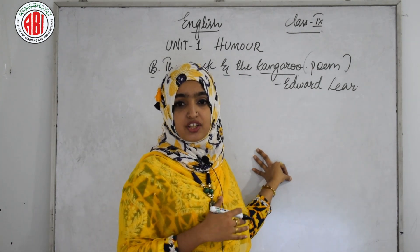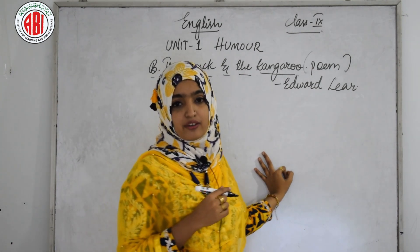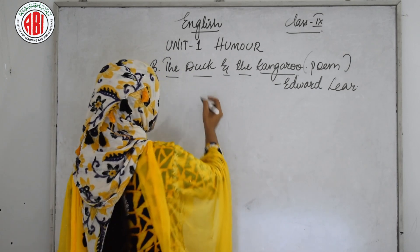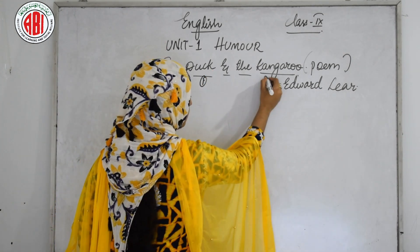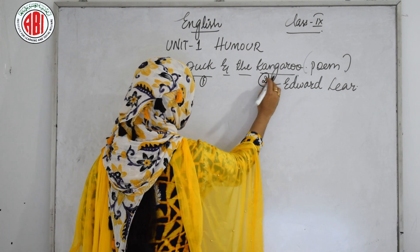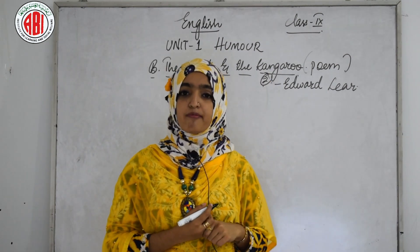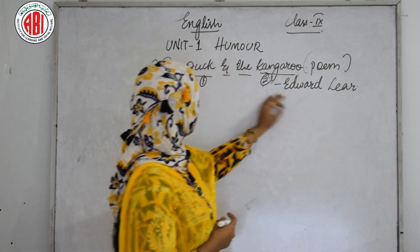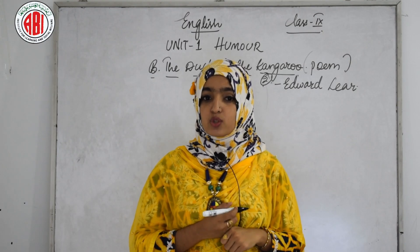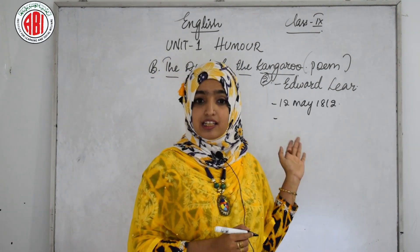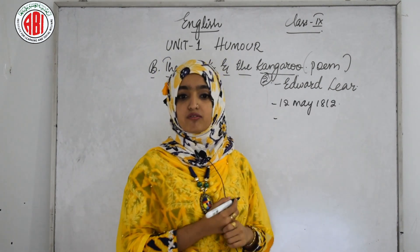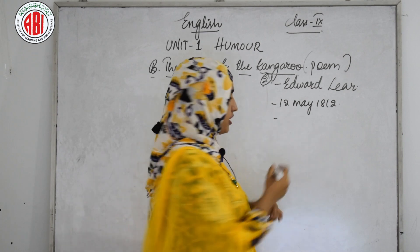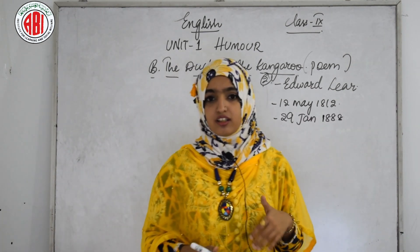In this poem there is a conversation between a duck and a kangaroo, so there are only two characters: the duck and the kangaroo. Before beginning with the poem, let us look at the poet's introduction. The poet of this poem is Edward Lear. He was born on the 12th of May 1812 and he left the world on the 29th of January 1888.